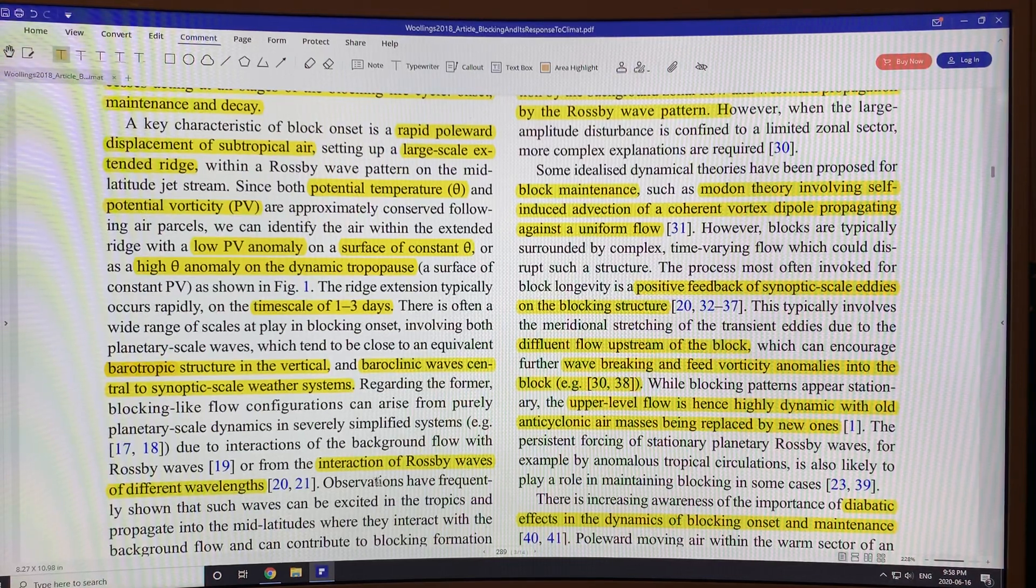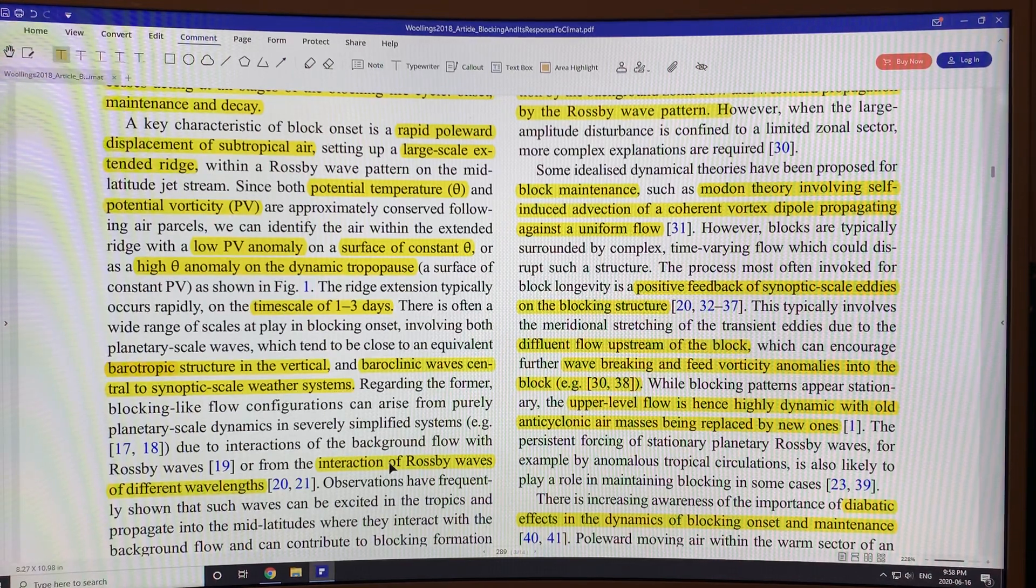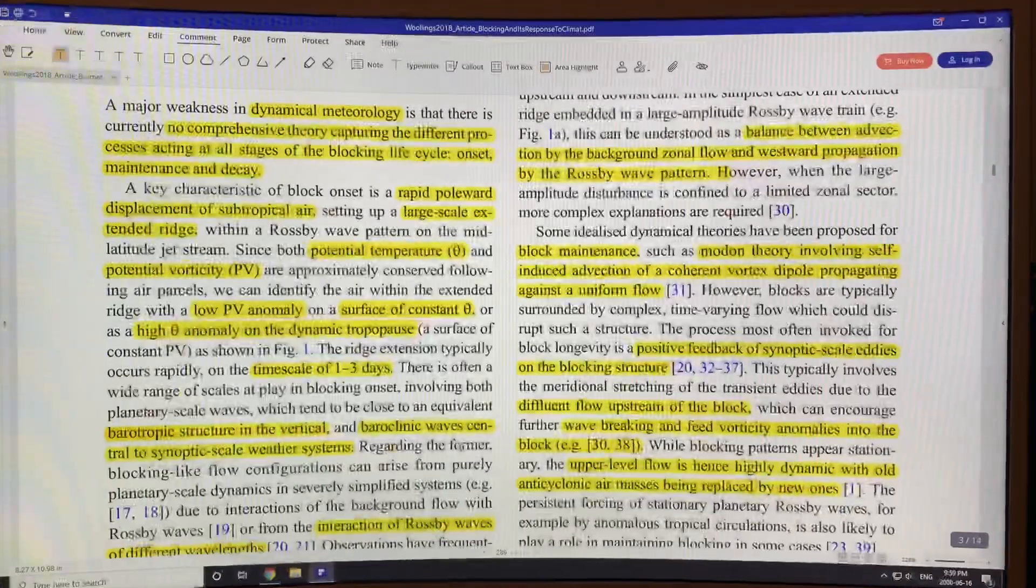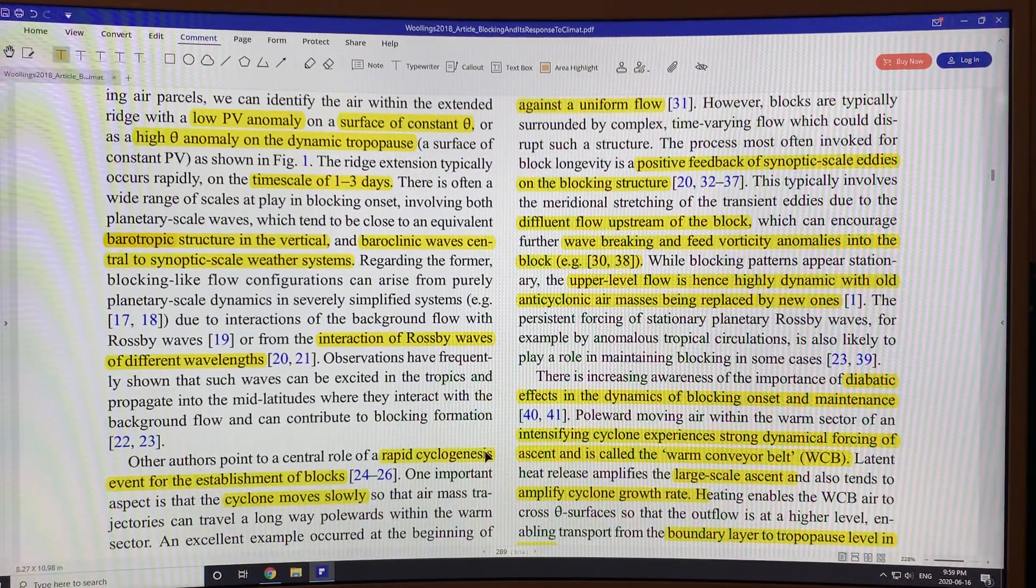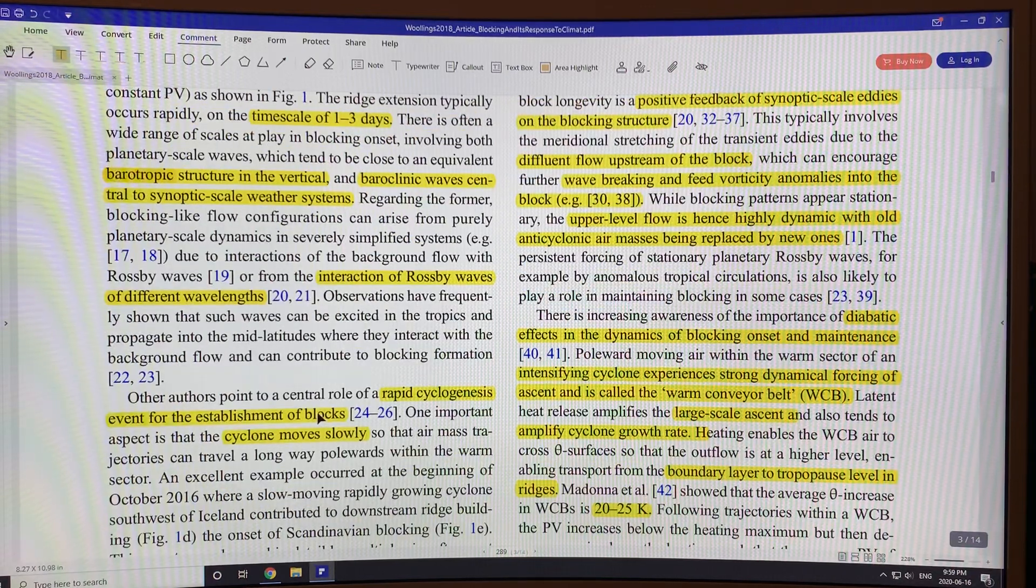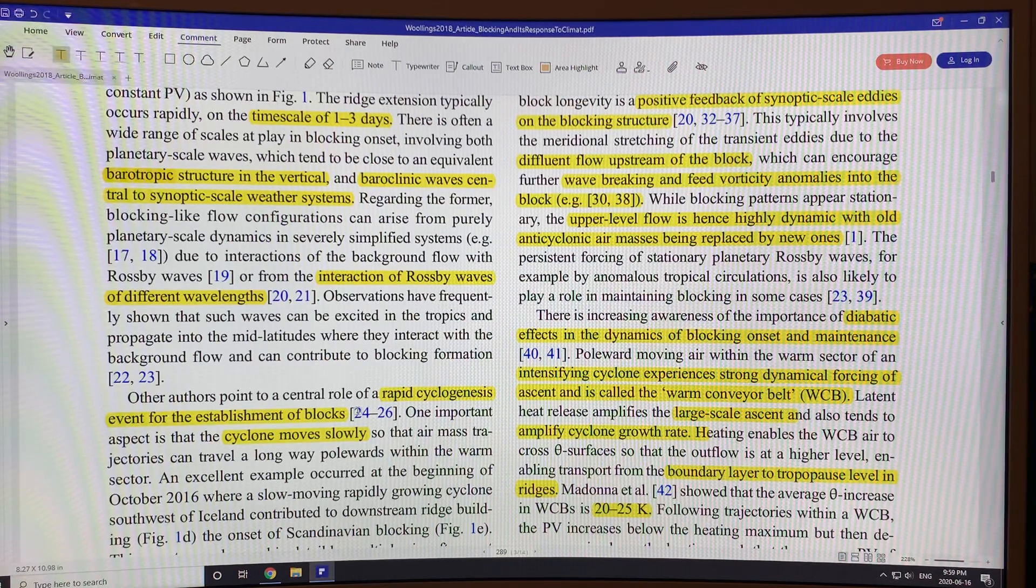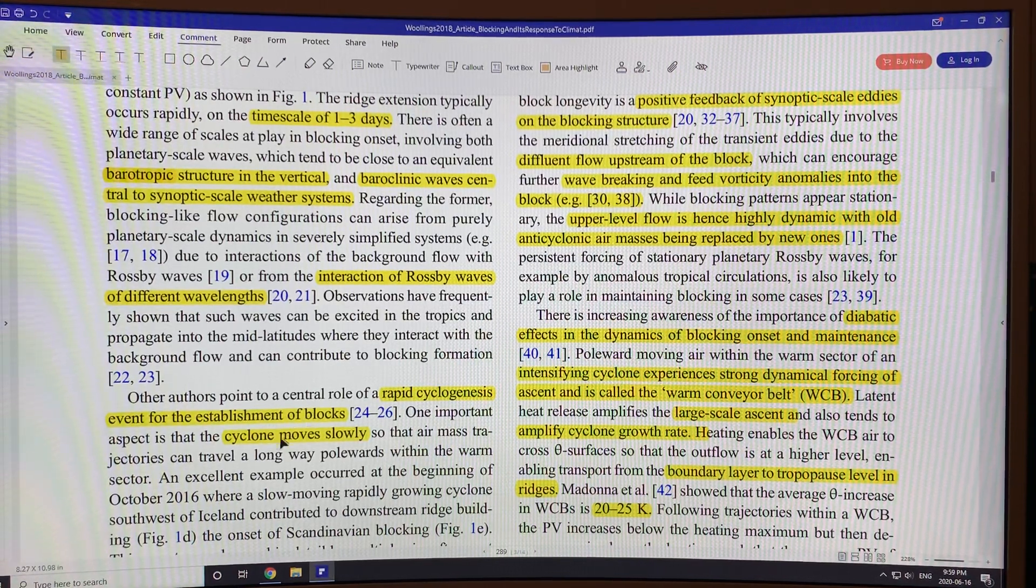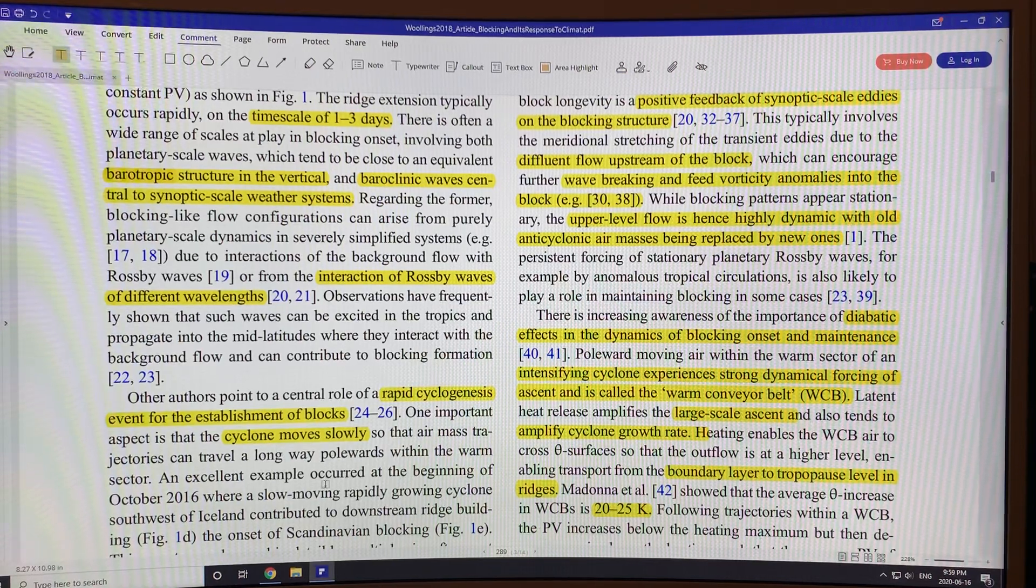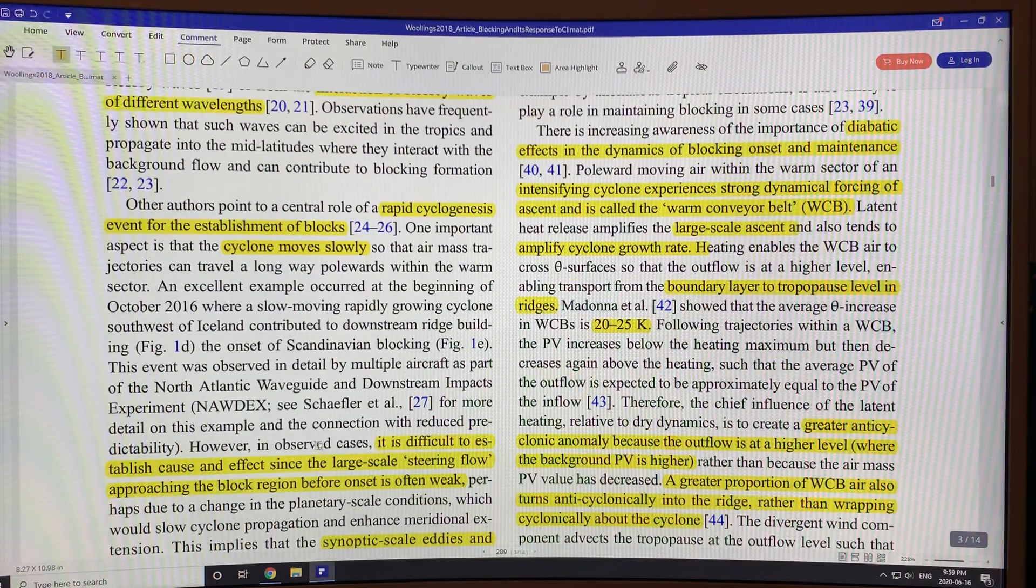You can have an interaction of the Rossby waves of different wavelengths and you can get different types of configurations as I showed you, the five different types. Often rapid cyclogenesis is required for the establishment of the block. So cyclones could be forming first on the wings and then the ridge develops as a result. The cyclone moves slowly so the air mass on the ridge can move quite far north and maintain its characteristics.